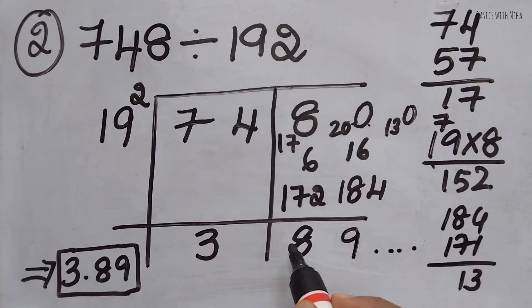If I put it here as 13 remainder, then it will just continue. So I can write my final answer as 3.89. As I told you, any number after this split will be in the decimal place, so it is 3.89.